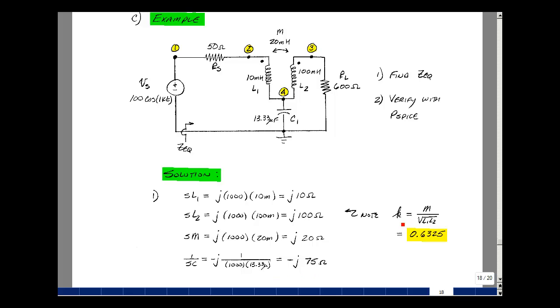For SPICE, we're actually going to calculate the coupling coefficient, and that was M divided by the square root of L1 L2. So given the value of M of 20 millihenries, L1 of 10 millihenries, and L2 of 100 millihenries, I'll then calculate K, and that turns out to be 0.6325.